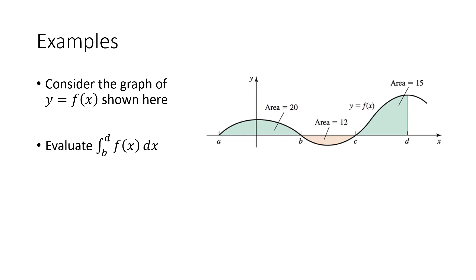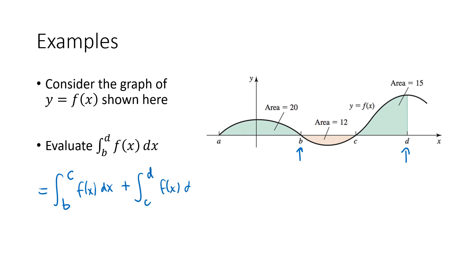For the integral from b to d, we break it into the integral from b to c plus the integral from c to d. The integral from b to c is negative 12, and the integral from c to d is positive 15 because it's above the x-axis. Adding those together gives 3.